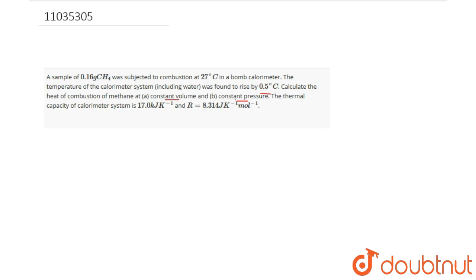So the combustion reaction, if we write, CH4 plus 2O2 will give you CO2 gas plus 2H2O liquid. So in this case delta Ng for the gaseous change would be 1 minus 3, that is minus 2.